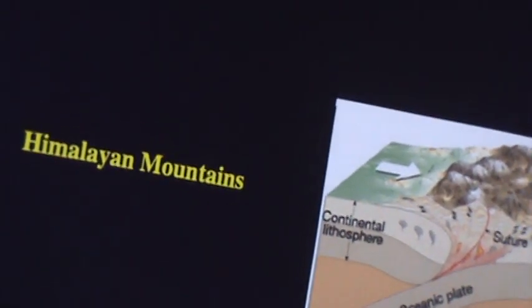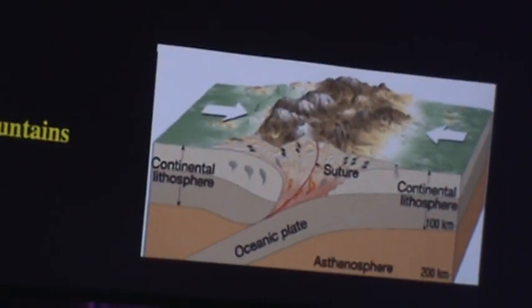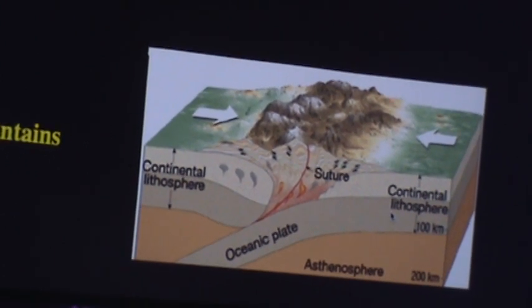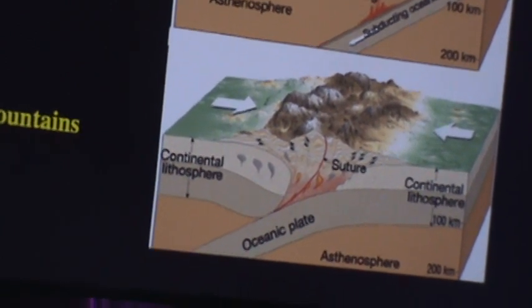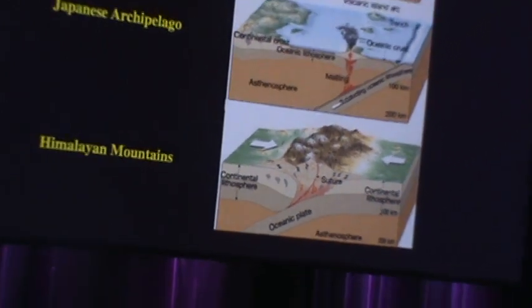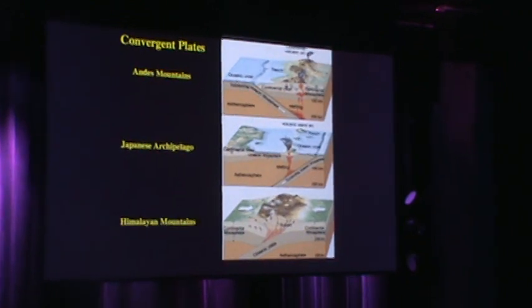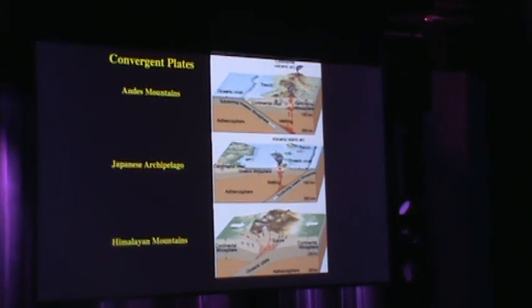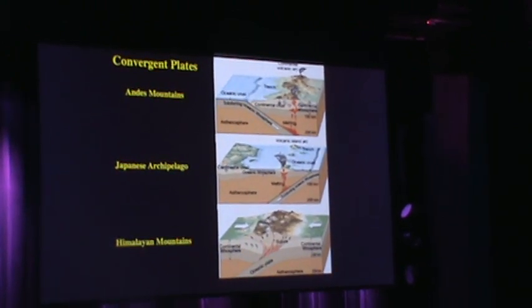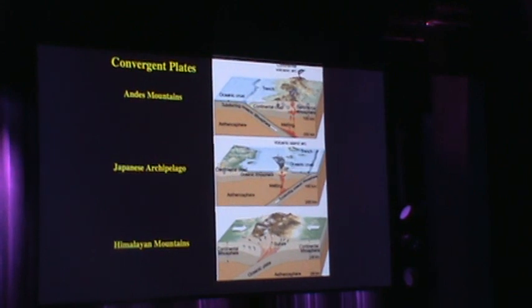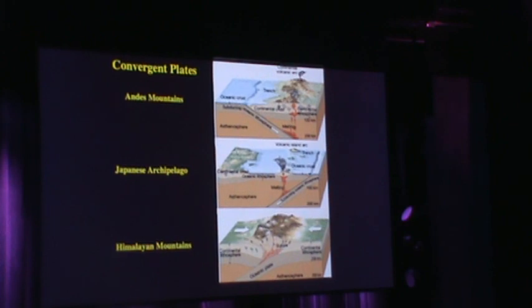When two continental plates bang together, one example of that is the Himalayan mountains. You can see that one goes down as a subduction, the other one is being lifted up — that's how the Himalayan mountains have developed. So in each case it's a question of the plates moving over a semi-plastic undercover. It's sort of like pushing cookies over dough slowly. Or better yet, perhaps ice — less dense than water, moving back and forth. When it bangs together, you could have the same thing happening that happens when the plates go together.